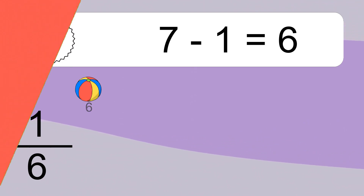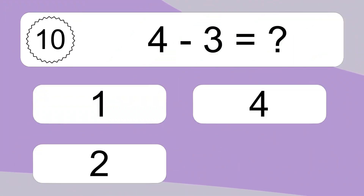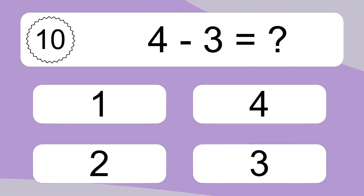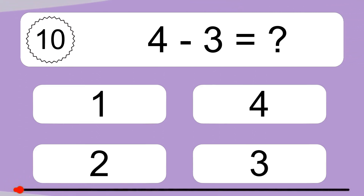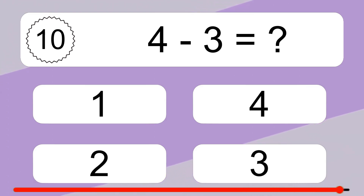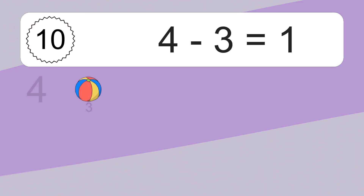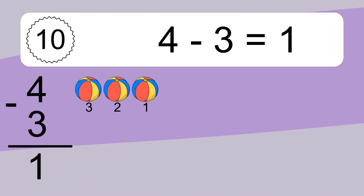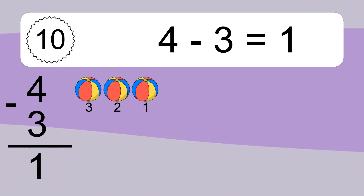4 minus 3 equals what? 4 minus 3 equals 1. Let's count it: 3, 2, 1.